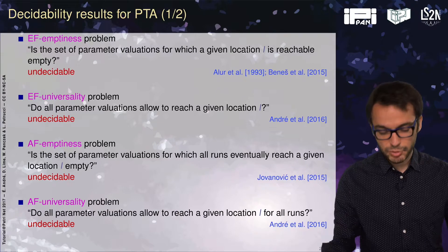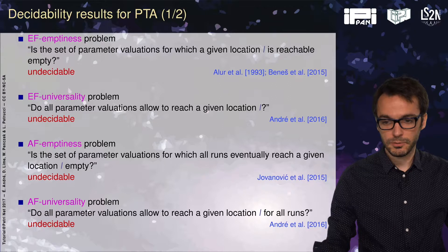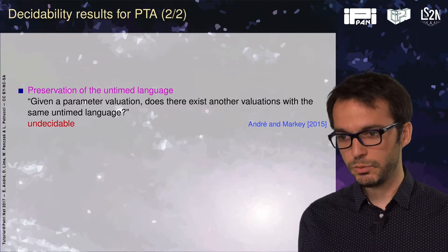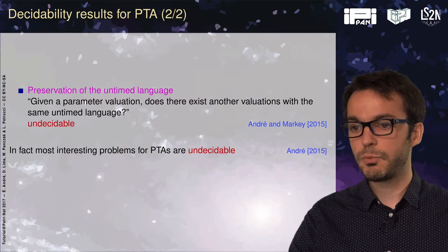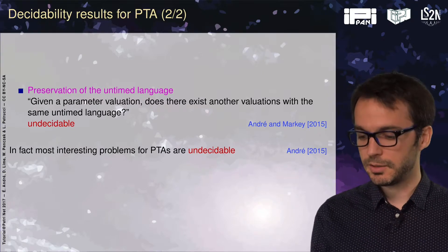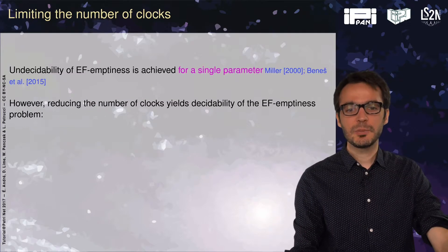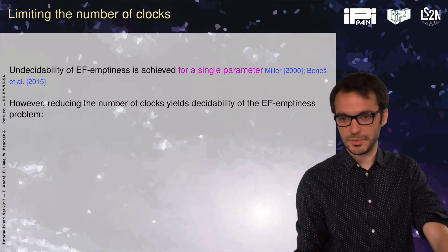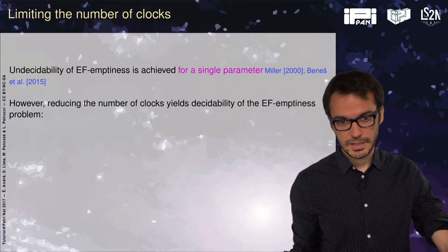The AF universality problem asks whether all parameter valuations allow all runs to reach a given location. The preservation of the untimed language is also undecidable, shown two years ago. In fact, most interesting problems for parametric timed automata are undecidable. The reference here is a survey on decision problems for parametric timed automata. Undecidability of EF emptiness is achieved for a single parameter, known both in the rational and discrete settings.